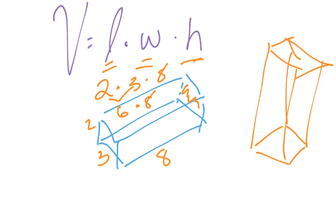I just know I have to multiply all three numbers together. 2 times 3 is 6, 6 times 8 is 48 units cubed.